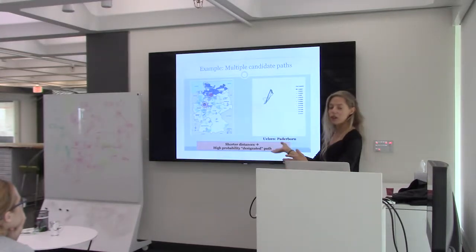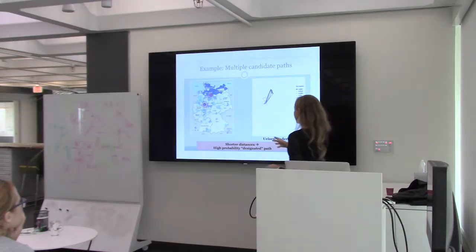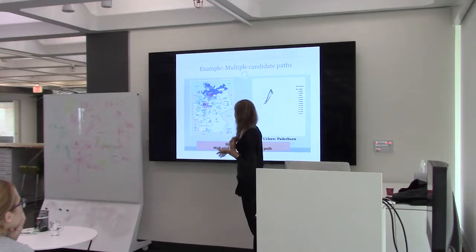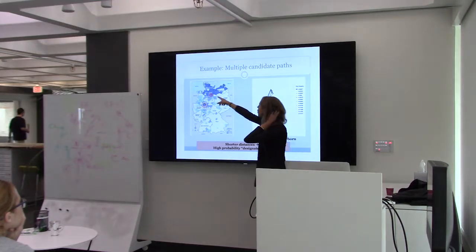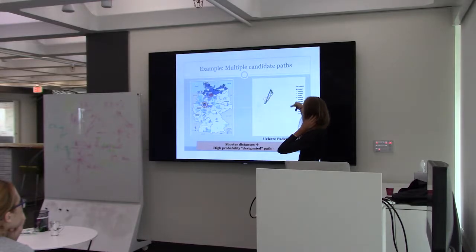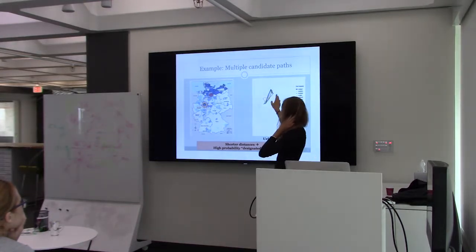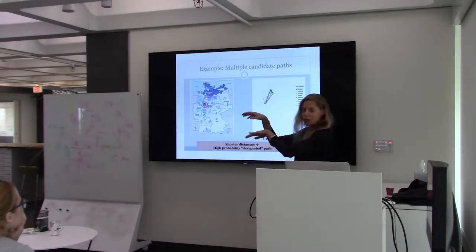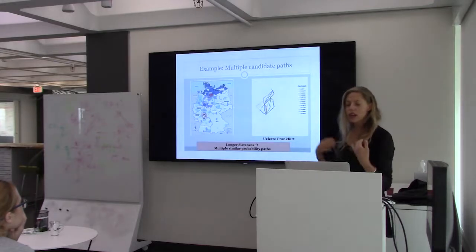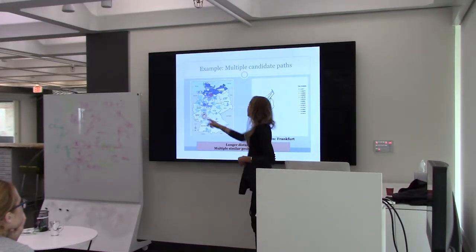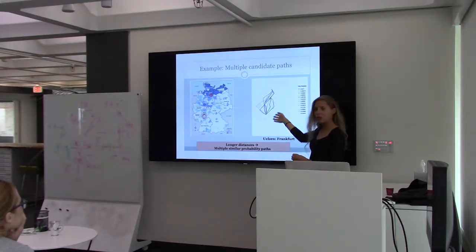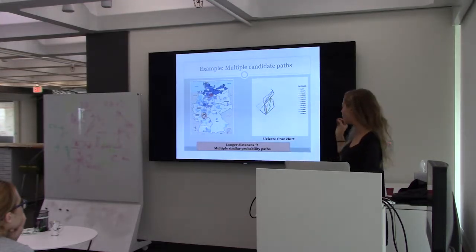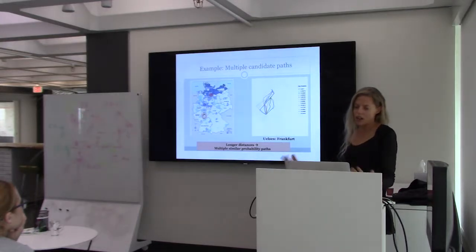To dig into that with an example from our network model: looking at the 2011 E. coli outbreak, there's a large cluster of illnesses in the county called Paderborn. If we look at the top 10 probability paths from the source location to Paderborn, there is one that is much higher probability than the others — about double the second highest — because it's a shorter distance with really one designated path. But when we look at another destination like Frankfurt, which is a larger distance, there are many paths with much more similar, closely distributed probabilities. So we don't want to just look at the highest probability path; we'd kind of be choosing at random.